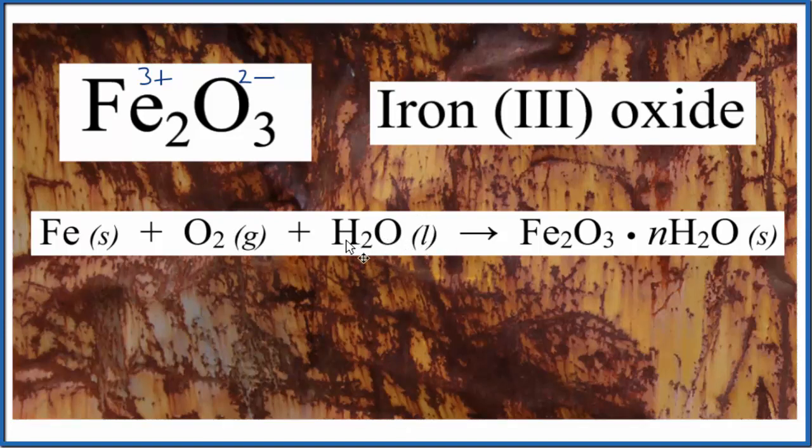What we end up with is iron three oxide with water. It's going to be hydrated with a certain number of water molecules. The n means a certain number of water molecules with the Fe2O3.